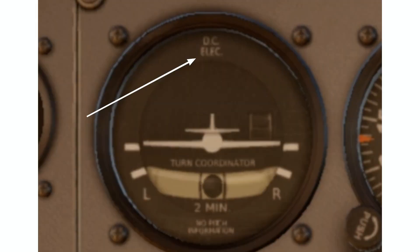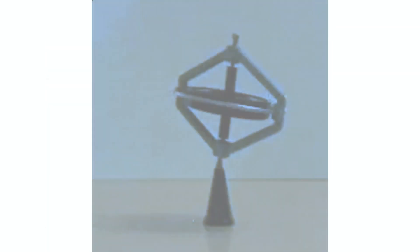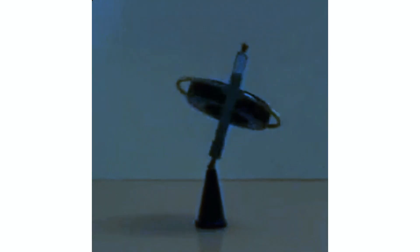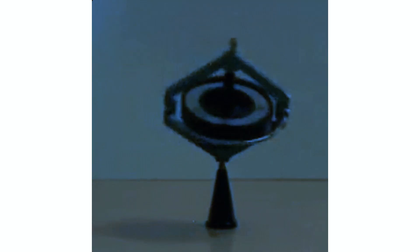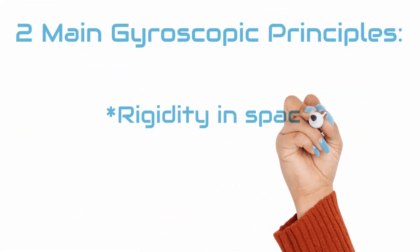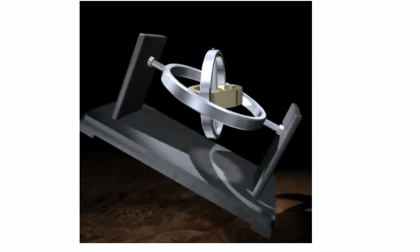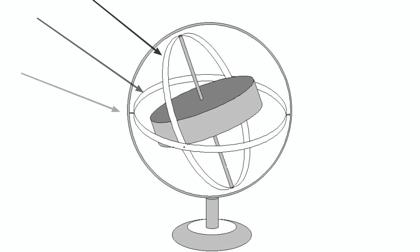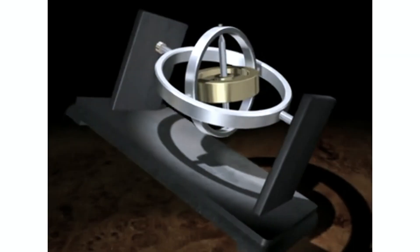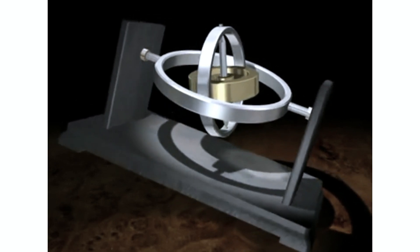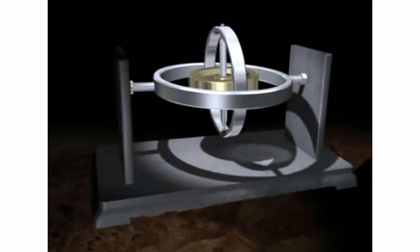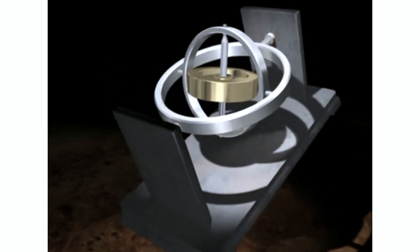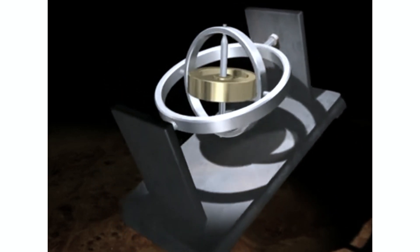They can be driven by electricity or by air suction. A gyro is a heavily weighted spinning disk that is able to maintain its position and orientation. Gyros operate based on two principles: rigidity in space and precession. Rigidity in space speaks to a gyro's ability to remain in a fixed position in the plane in which it is spinning. By mounting the gyroscope on a set of gimbal rings, the gyro is able to rotate freely in any direction. If the gimbal ring rotates, the spinning gyro will remain in the same plane in which it was originally spinning. So essentially, as the airplane moves, it is rotating and moving about the gyro while the gyro remains in the same position.